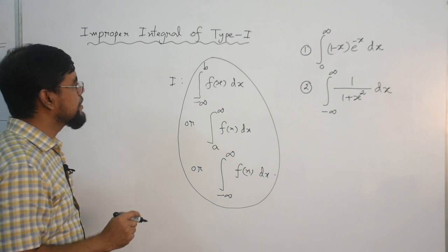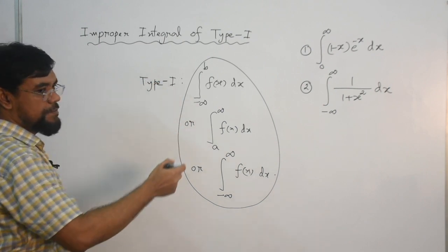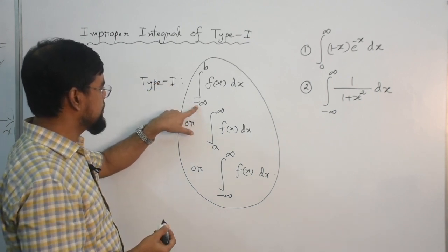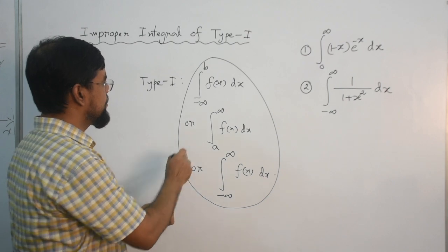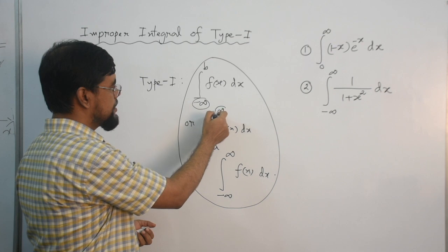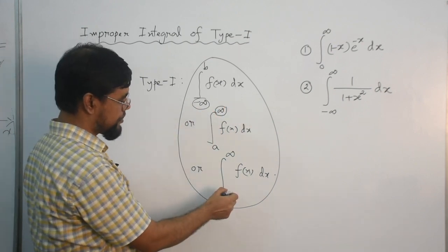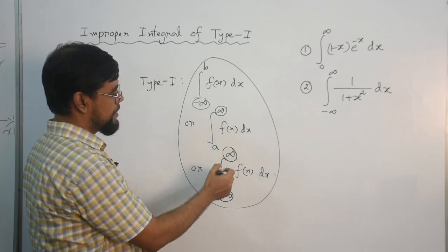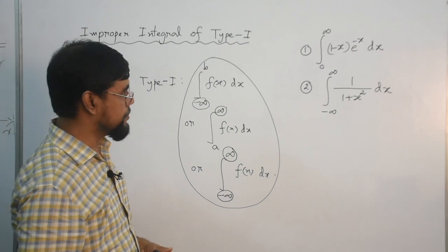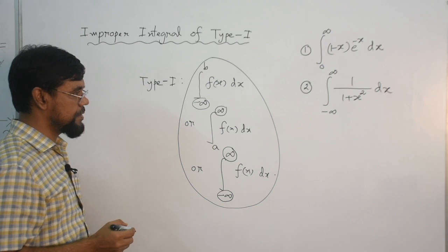Let me say it again. Improper integral of type 1, as I said in my previous lecture: if your integral involves either the lower limit, the upper limit, or both equal to infinity. In this integral lower limit is infinity; in this one upper limit is infinity; and in this one both are infinity. So this is improper integral of type 1. Now the question is how can we solve these types of integrals?